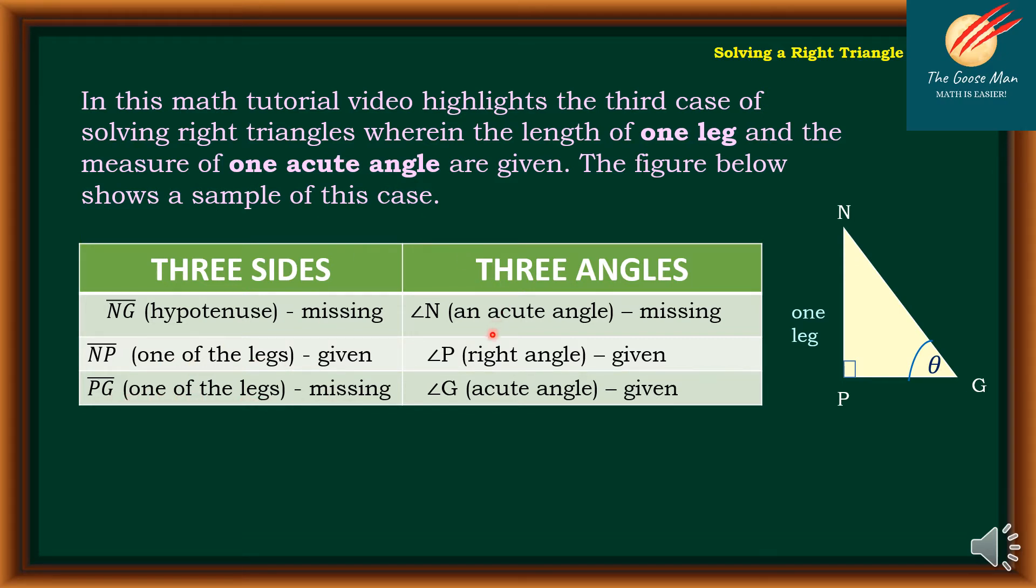For three angles, we have angle N, an acute angle is missing, while angle P is the right angle which is given, and angle G, an acute angle is given as well.